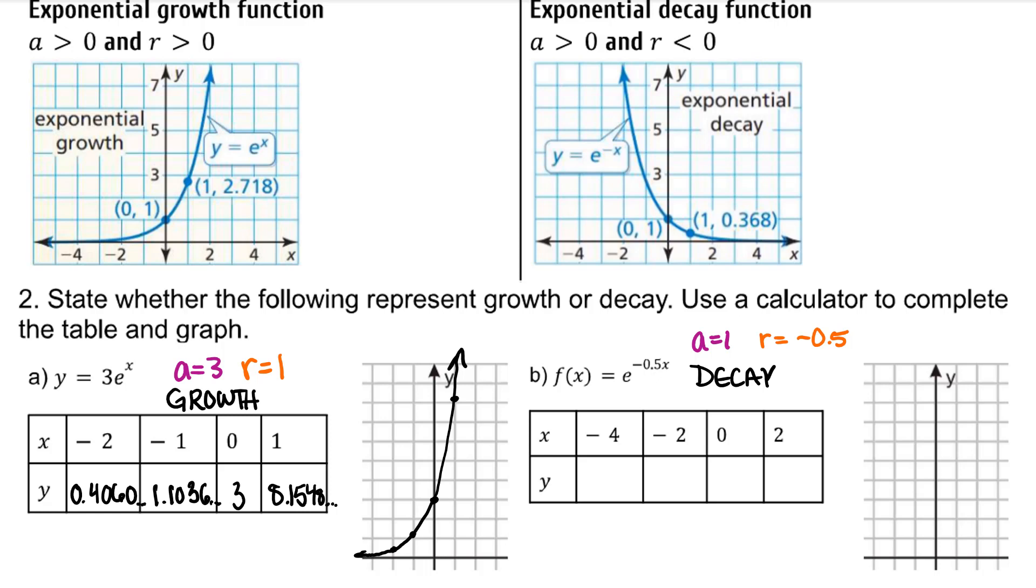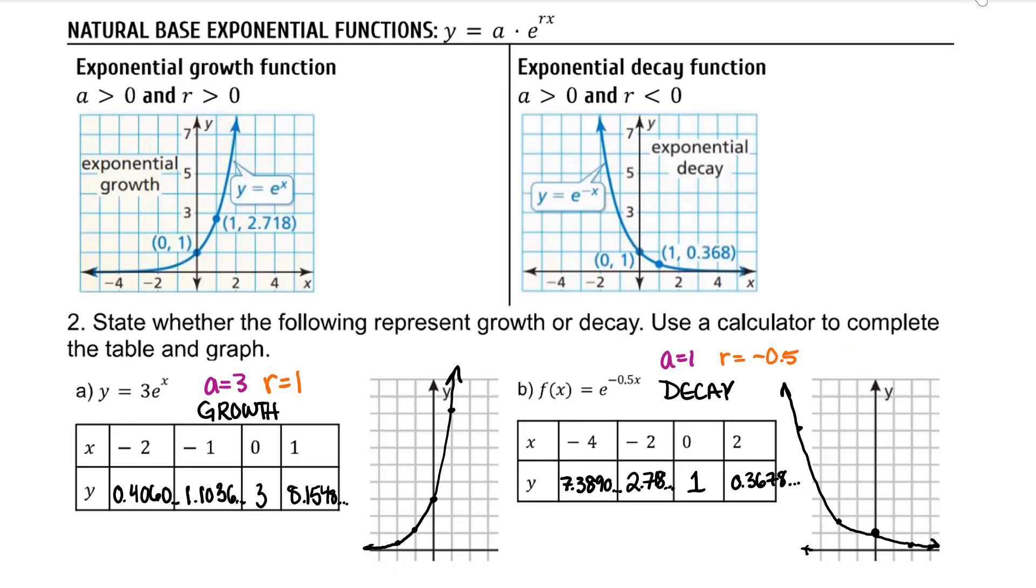Remember to make sure that you put parentheses around the negative 0.5 and the x so the calculator knows e is to the power of the entire product. And again, we have a horizontal asymptote at y = 0. So here are your natural base exponential functions.